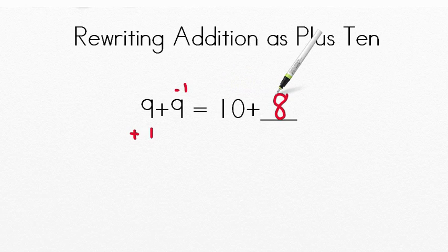Now you've been practicing rewriting addition as plus 10. Remember, adding by 10 is a lot quicker than adding smaller facts like 9 plus 9. 10 plus 8 to 18 is much quicker. Use this strategy to add faster. Great job, and I can't wait to talk to you soon about math.